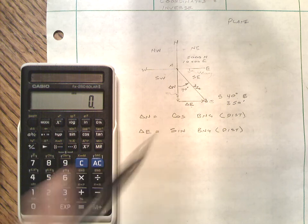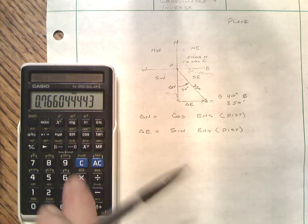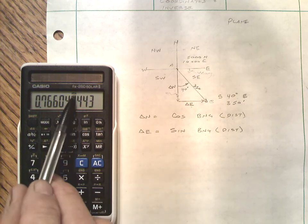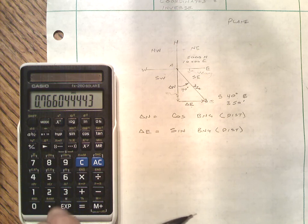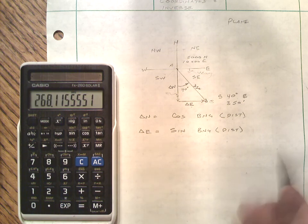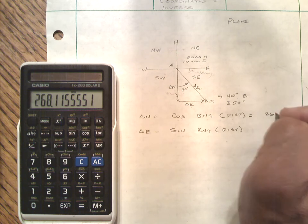So I particularly like this one but we'd simply take cosine of 40, make sure that you're in degrees, cosine of 40 and multiply it by our 350 feet. So in this example we're at 268.116.